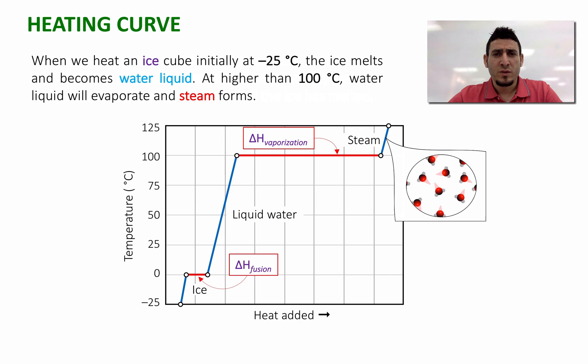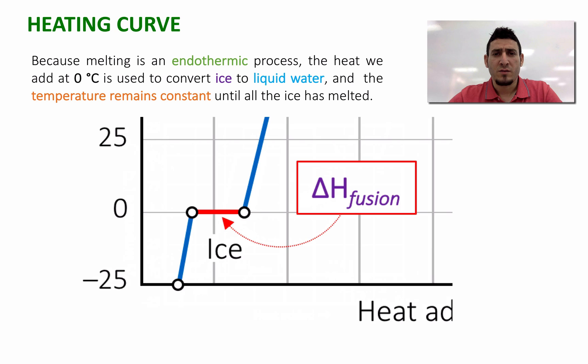Here's an important question: why does the temperature not change around zero degree? The answer is because melting is an endothermic process. The heat we add at zero degree is used to convert ice to liquid water, and the temperature remains constant until all the ice has melted. And in this area, we have both states, we have ice and we have liquid water.